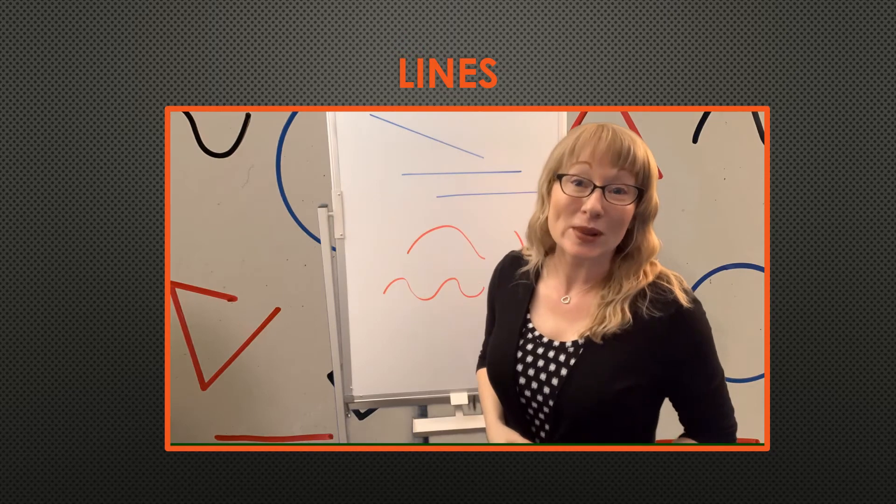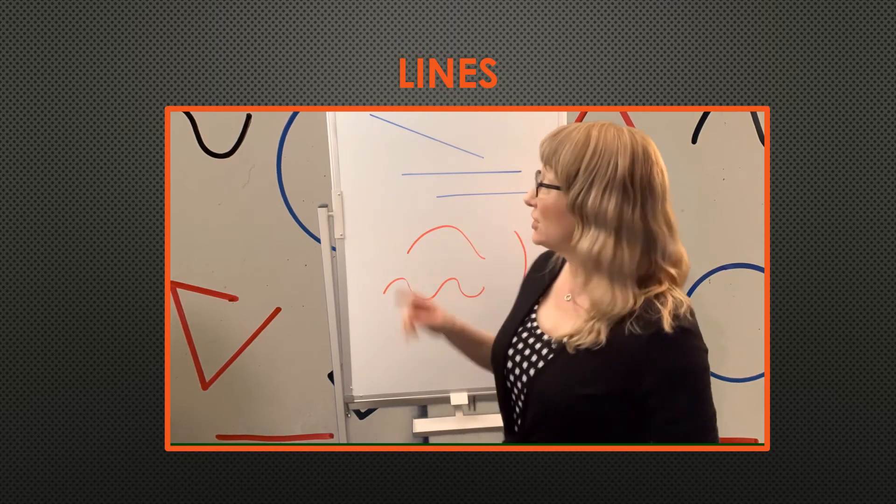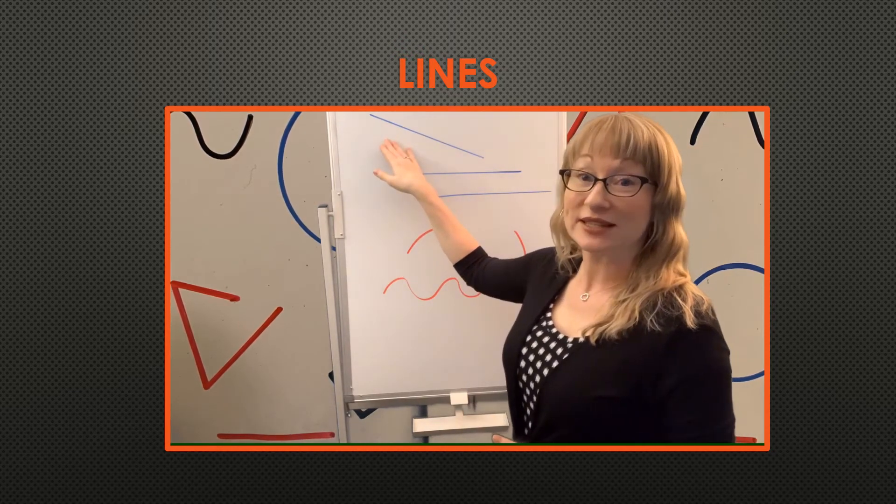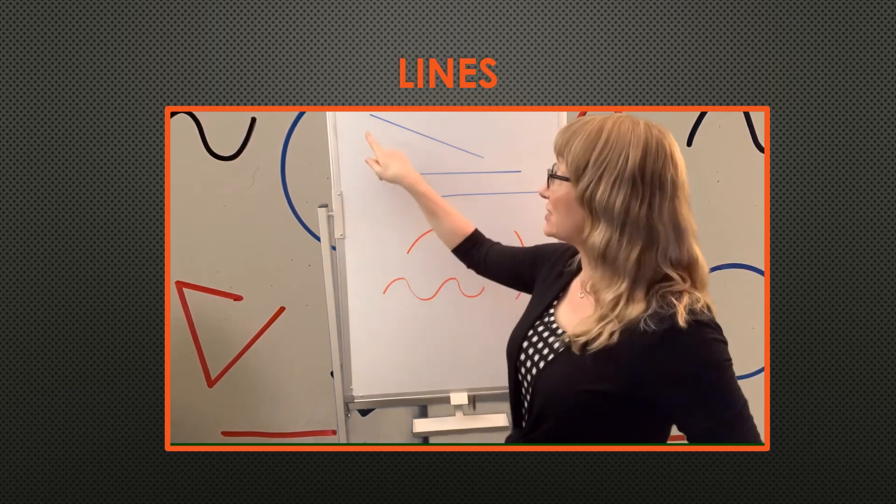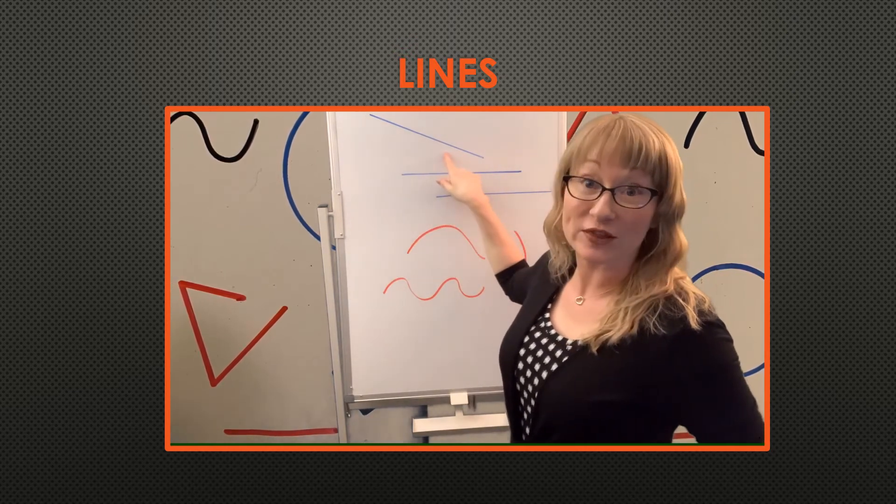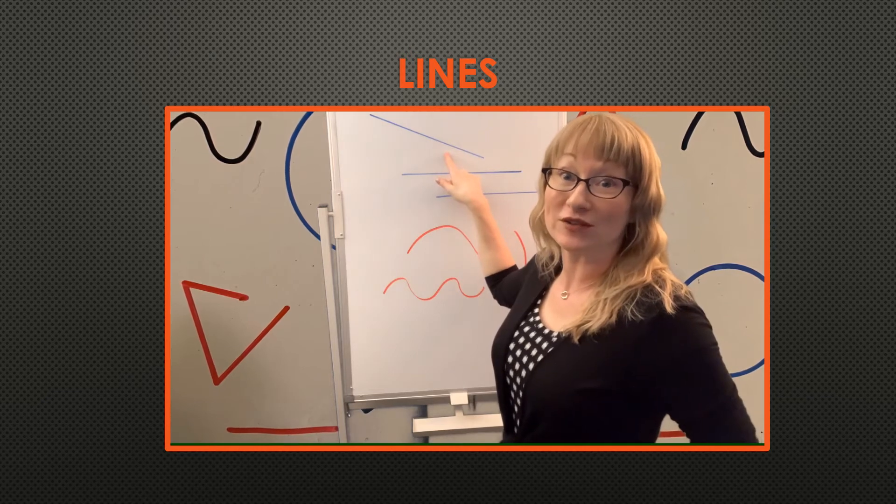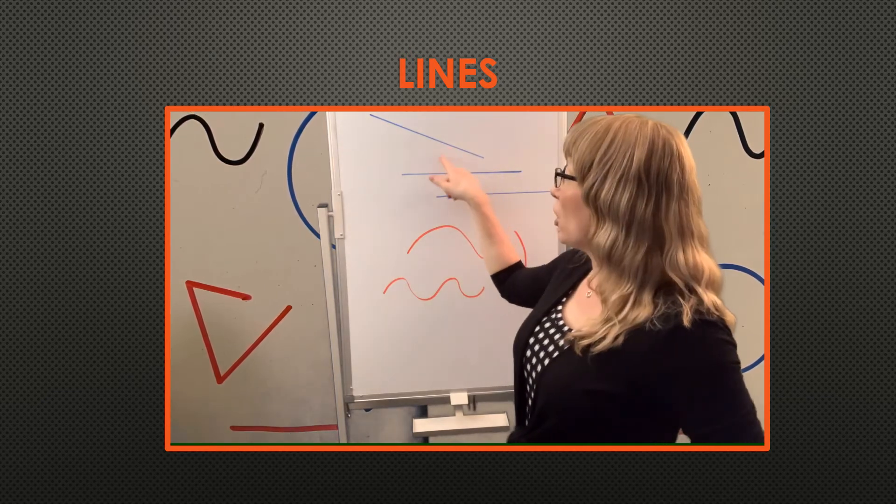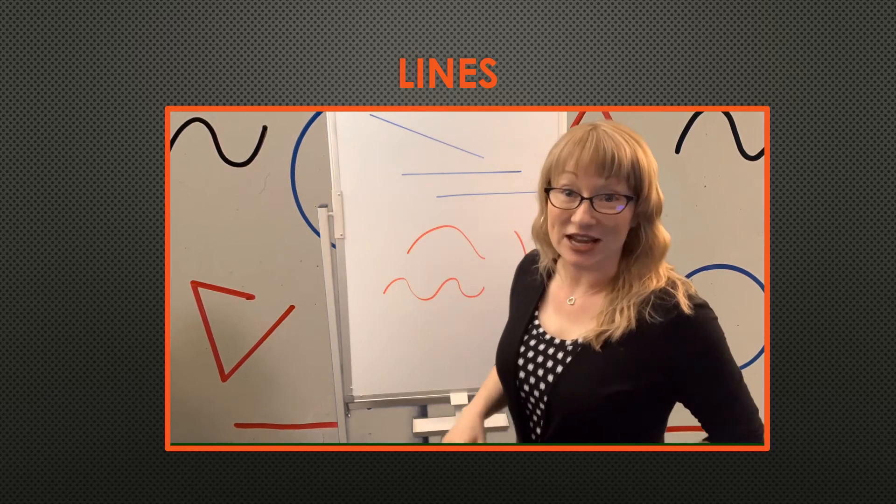Welcome back. Well, let's take a look at a few lines. So take a look at the blue lines. These are straight lines. You can see they're perfectly straight. There's no bend or curve in them at all. So all the blue lines are examples of straight lines.